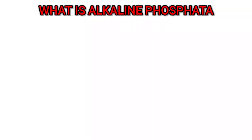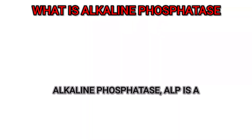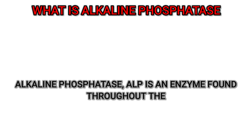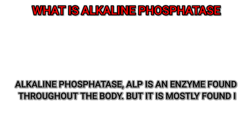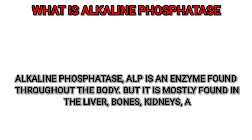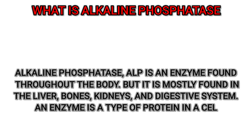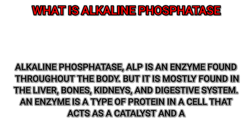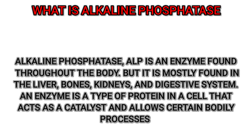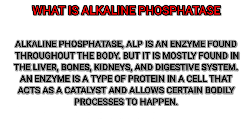What is alkaline phosphatase? Alkaline phosphatase (ALP) is an enzyme found throughout the body, but it is mostly found in the liver, bones, kidneys, and digestive system. An enzyme is a type of protein in a cell that acts as a catalyst and allows certain bodily processes to happen.